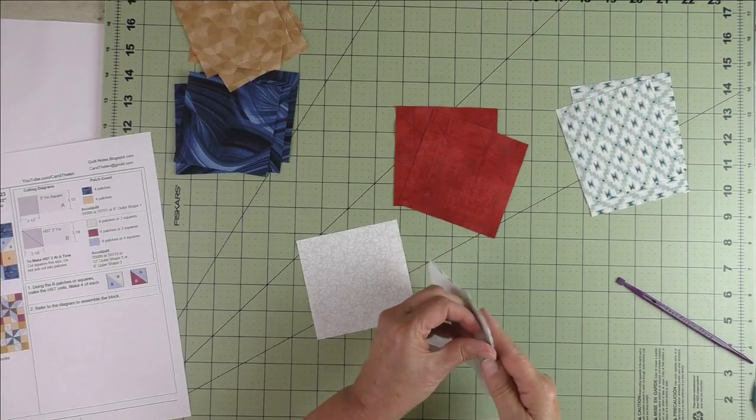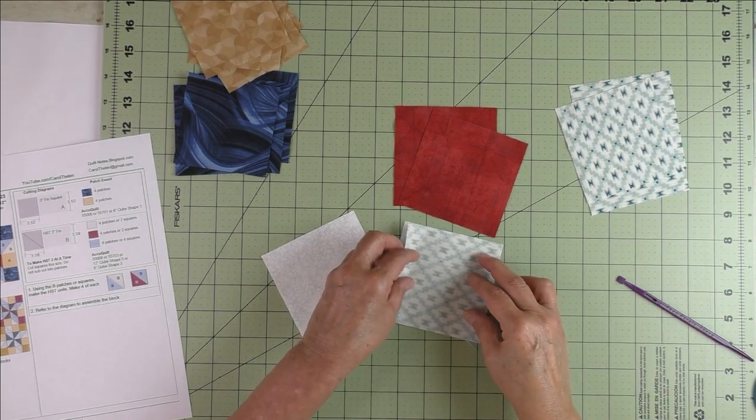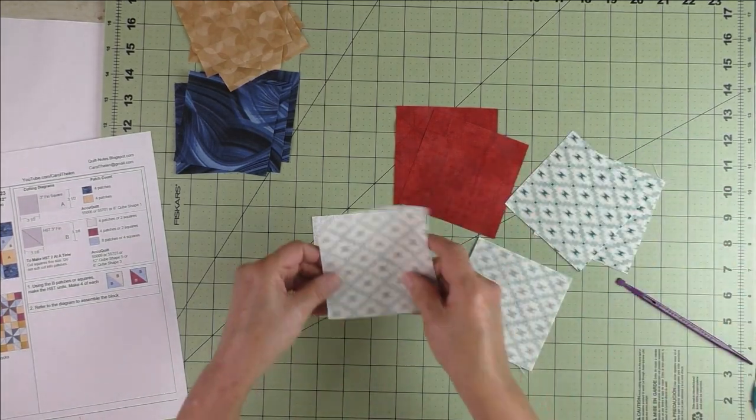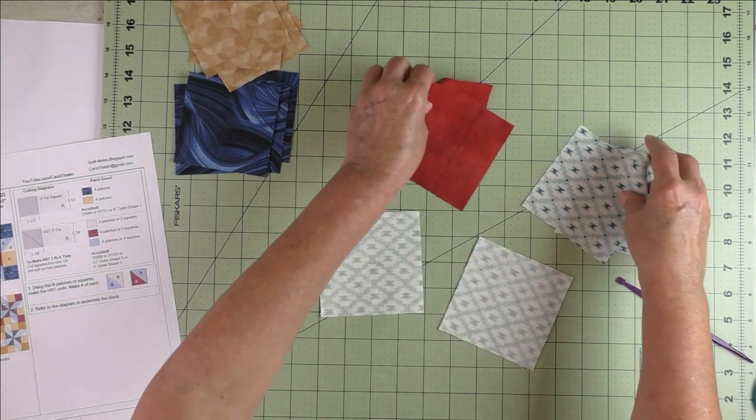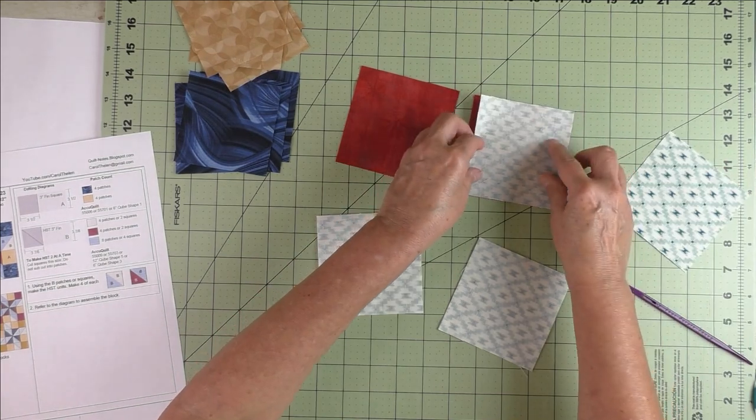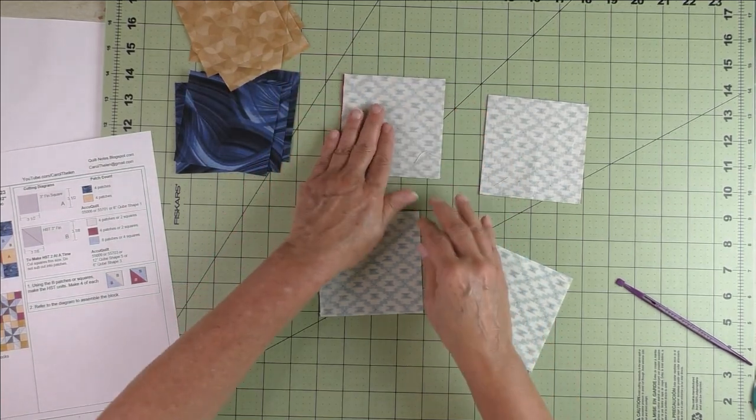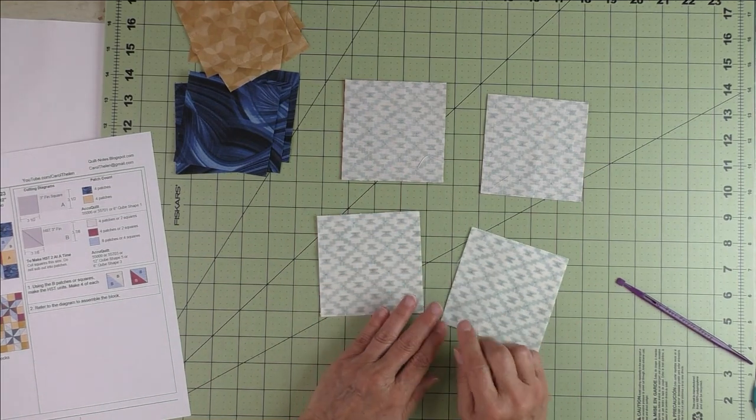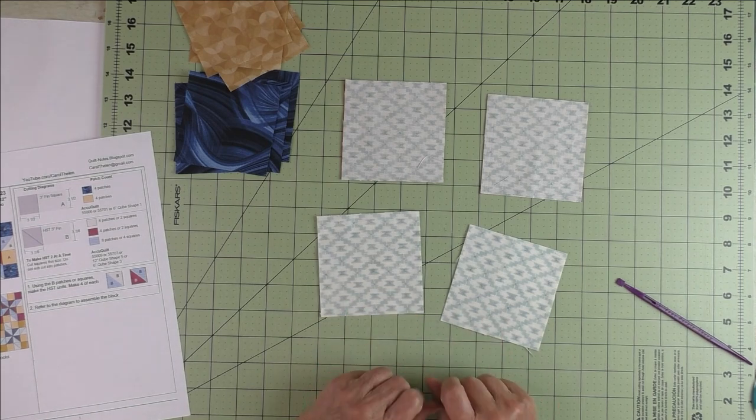We'll take the background fabric and the light blue, and we'll put them together, right sides together. And we have two of those. We'll get two from this and two from that. Then we'll put these two together, the red and the light blue. So we'll get two from each of this stack. Now, if you're not familiar with the method of making two at a time, stay tuned for a short demo that shows you how to do this.